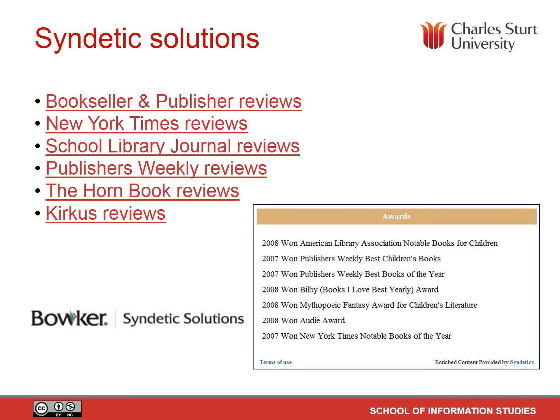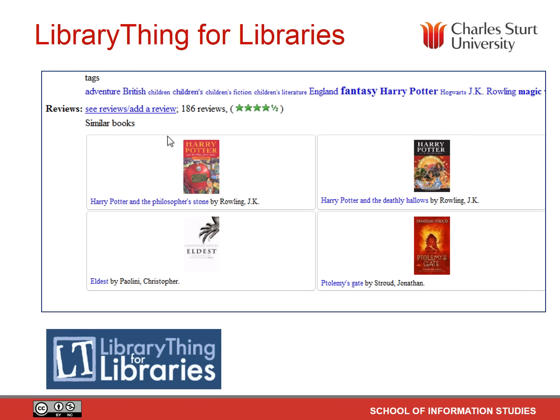Since July 2011, SCIS has added an enhanced content service to the SCIS OPAC from Syndetics Solutions and LibraryThing for Libraries via subscription. The bibliographic records in the SCIS OPAC are enhanced to display additional details about resources — information such as plot summaries, author notes, awards, and reviews, which is particularly interesting for your coming task. Note the reviews in Syndetics' content come from authoritative commercial reviewing services, and LibraryThing has reviews sourced from the LibraryThing customer base around the world. This adds value to searching SCIS for resources.